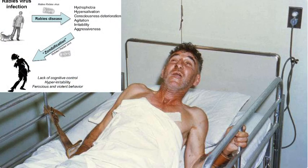Rabies is a viral disease transmitted to humans through the bite or scratch of an infected animal, typically dogs, bats, raccoons, or foxes. The virus affects the central nervous system and, once symptoms appear, is almost always fatal.